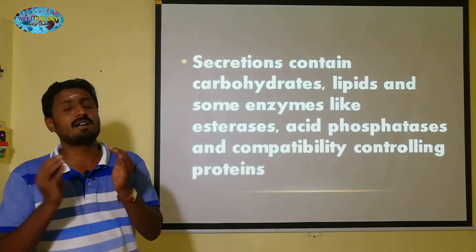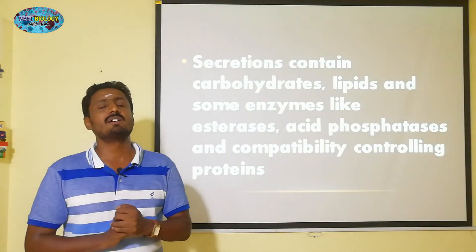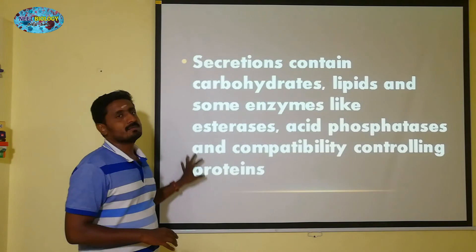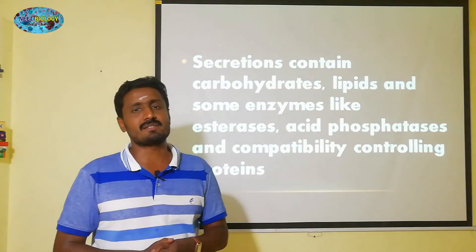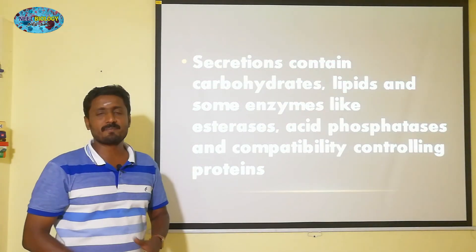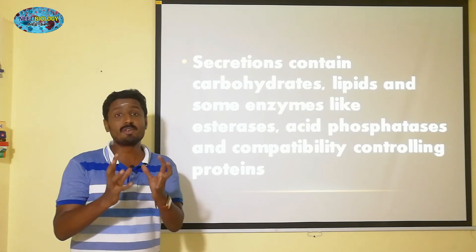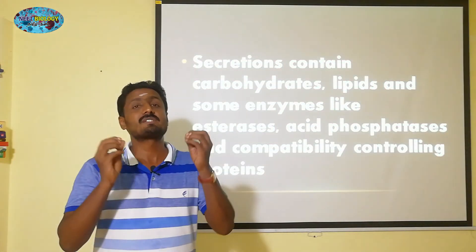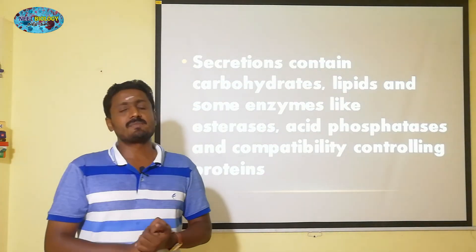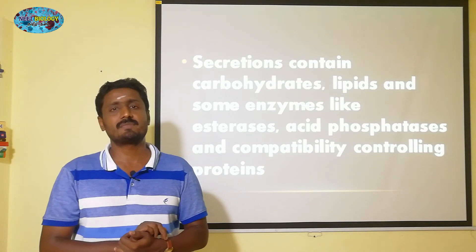Here, what is the hollow style of transmitting tissue? There is a single layer of transmitting tissue providing nutrition and incompatibility actions. If the cells are ready, the pollen tube is gone. In this process, the hollow style is about the monocotyledons. I will see you in the next video.